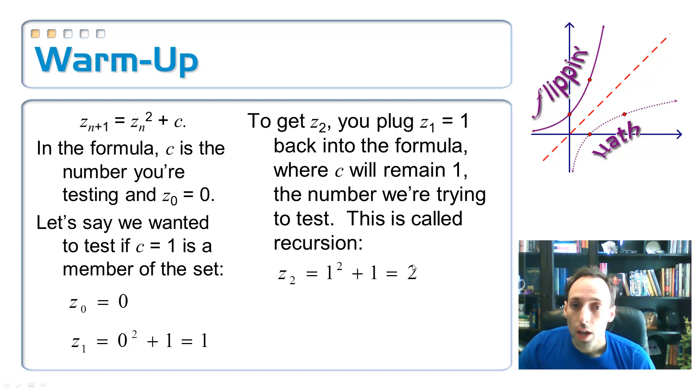Now to find Z sub three, I'm going to take that two and plug it back into the equation again. So it's going to be two squared, which is four plus one is five. So to get the next one, I'm going to take this five, stick it back into the equation and square it. And I get five squared plus one is 26.